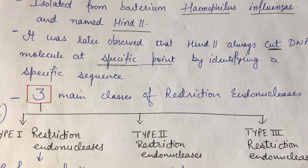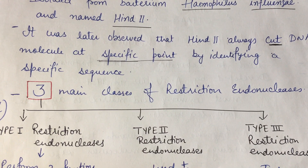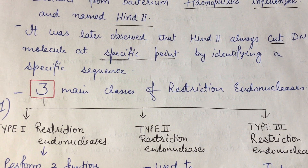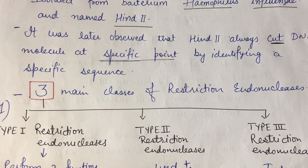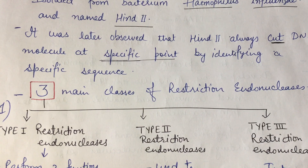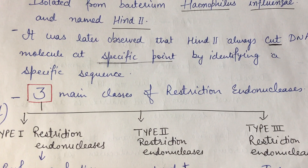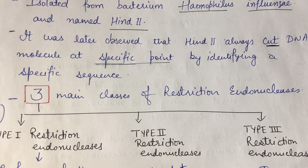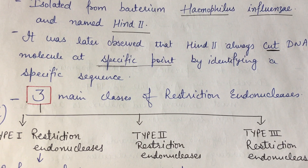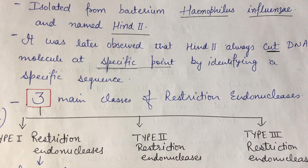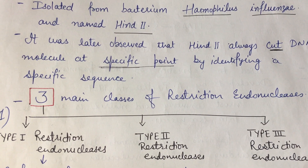This restriction endonuclease enzyme does not cut any random DNA sequence — it is a special type of enzyme. First of all, it identifies the specific sequences in the DNA, and then cleaves the DNA. HindII always cuts the DNA molecule at a specific point by identifying specific sequences.